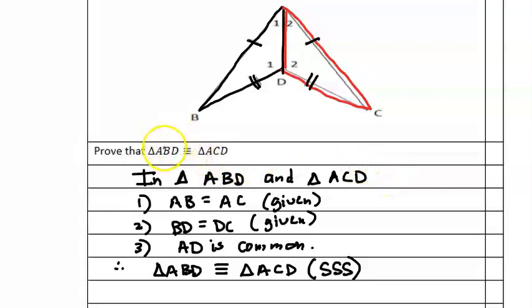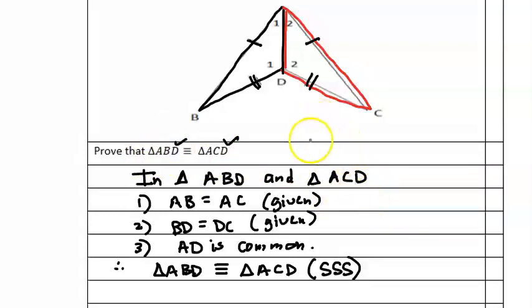Therefore, triangle ABD is congruent to triangle ACD. And remember, once we prove congruency, all the sides and all the angles will be equal to each other.